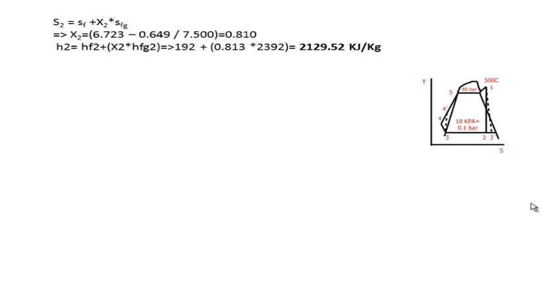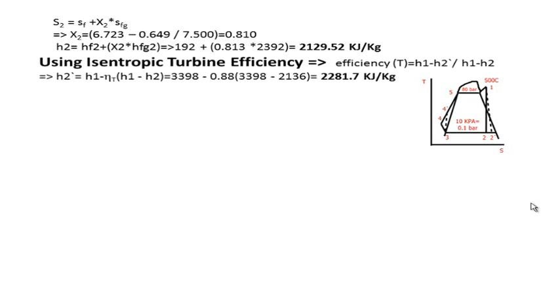Now we need to find the actual enthalpy exiting from the turbine. Using the isentropic turbine efficiency, which is the ratio between the actual work H1 minus H2 prime to the ideal work H1 minus H2, from this equation we can find H2 prime, the actual enthalpy of the steam leaving turbine, which would be 2281 kilojoule per kilogram.